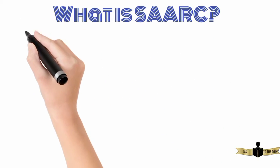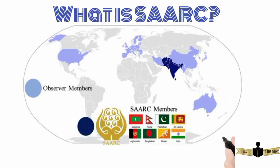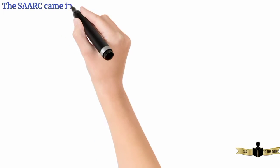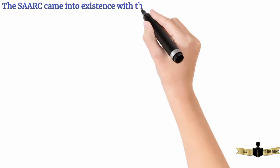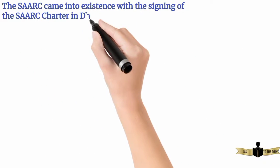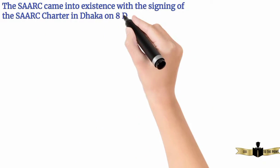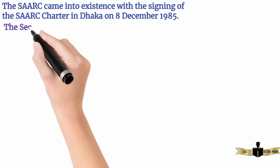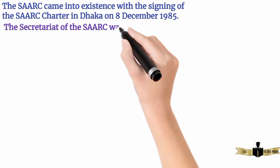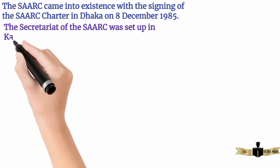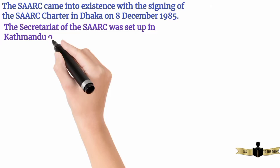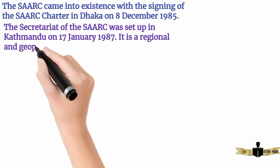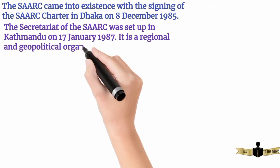What is SARK? The SARK came into existence with the signing of the SARK Charter in Dhaka on 8 December 1985. The Secretariat of the SARK was set up in Kathmandu on 17 January 1987. It is a regional and geopolitical organization.